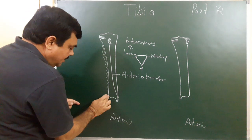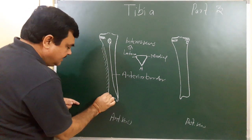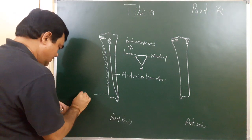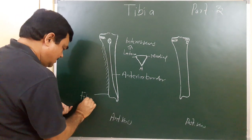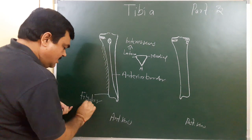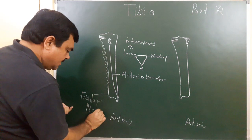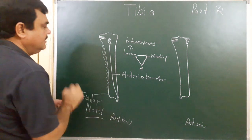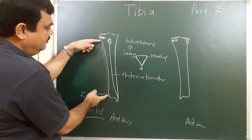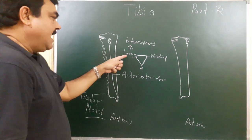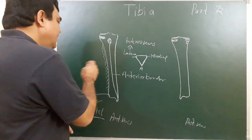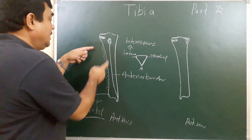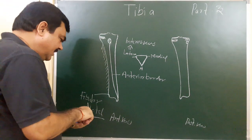It extends from the lateral condyle to the fibular notch — here is the fibular notch — and to the anterior border of the fibular notch. So it extends from here to here. This is the lateral or interosseous border. The interosseous membrane is attached here.